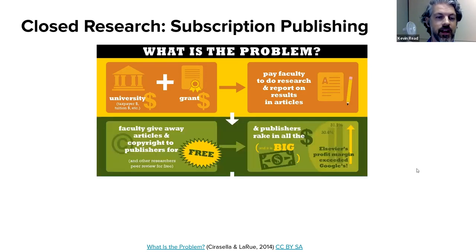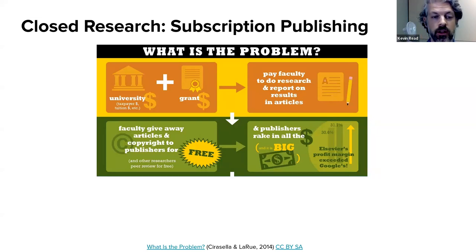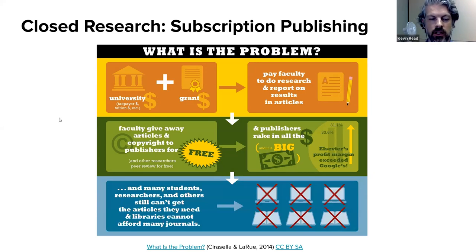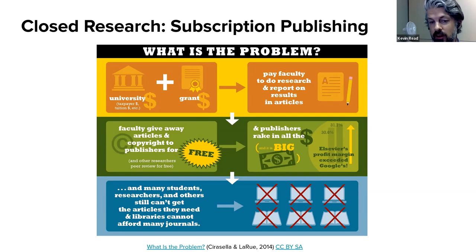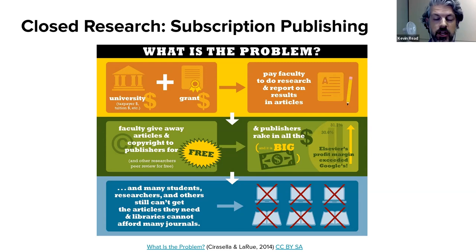Journals accept articles for free, so faculty and students are essentially giving away their copyright to publishers who then charge for access. Through this model, journals create very strong barriers — so even though we publish for free, many people can't access the material because they can't afford to subscribe. Libraries also struggle to pay for journal licenses every year, and these prices continue to increase.